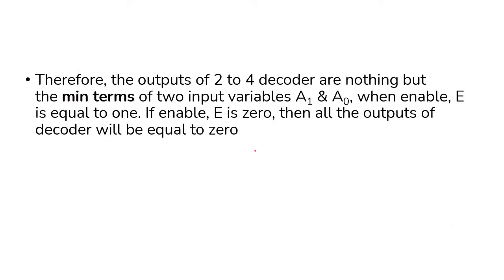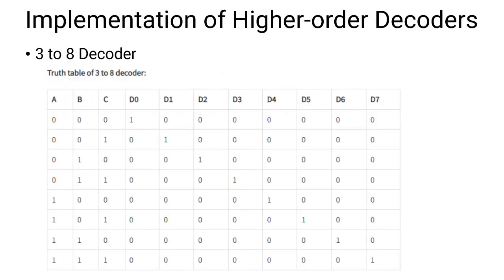The outputs of a 2-to-4 decoder are nothing but the minterms of two input variables A1 and A0 when the enable is equal to 1. If the enable is 0, then all the outputs of the decoder will be 0. Now let's take a higher-order decoder — I will consider the 3-to-8 decoder.